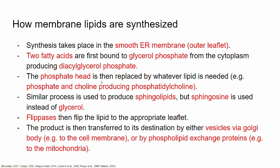This is how glycerophospholipids are made — because we have a glycerol backbone. There are other types of lipids as well. For example, sphingolipids are made in a similar way, but instead of using glycerol, we use something called sphingosine. So glycerophospholipids use glycerol; sphingophospholipids use sphingosine. For example, sphingomyelin is made in a similar way but with sphingosine instead of glycerol.